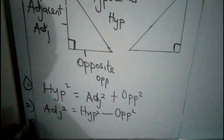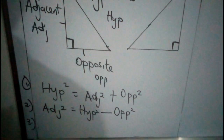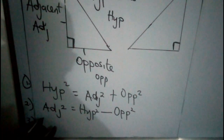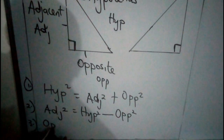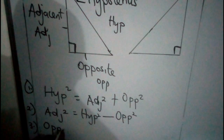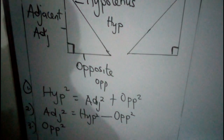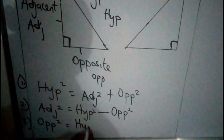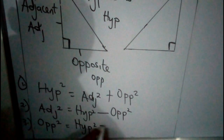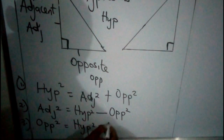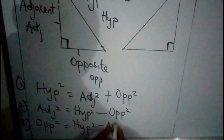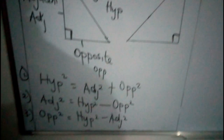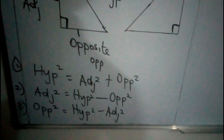And finally, the third side — if I have to find the opposite, which is also a shorter side, I will still subtract. Opposite squared equals Hypotenuse squared minus Adjacent squared.